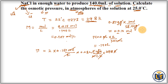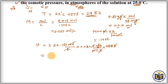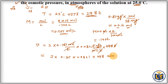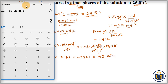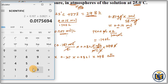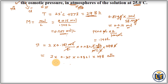Performing the calculation: 2 × 0.107 × 0.0821 × 298. Multiplying these values gives us approximately 5.24 ATM. This is the osmotic pressure of the solution.